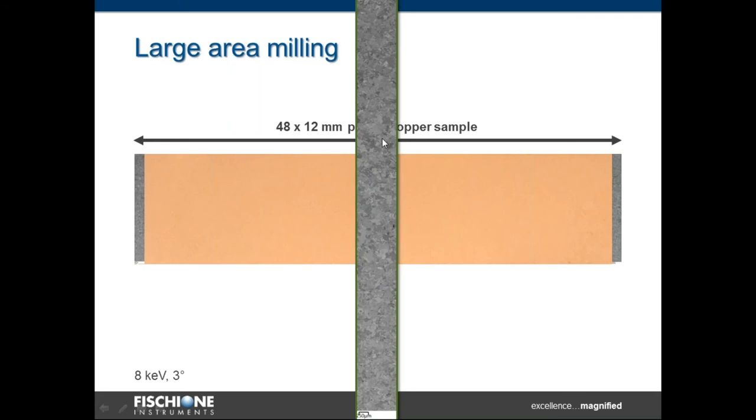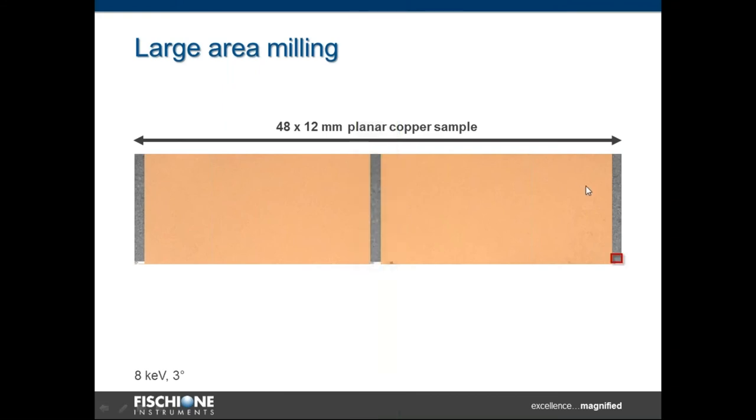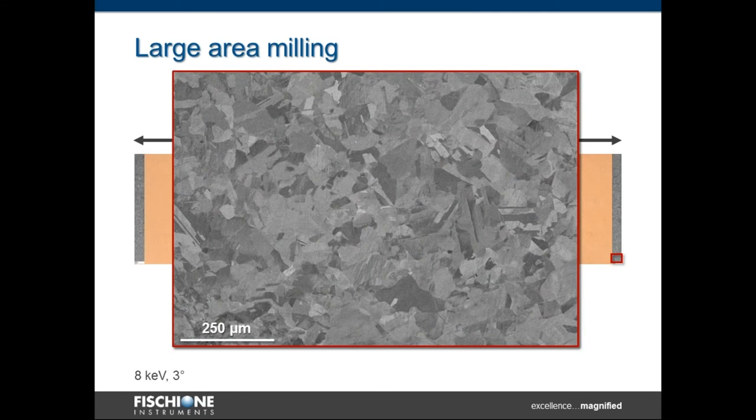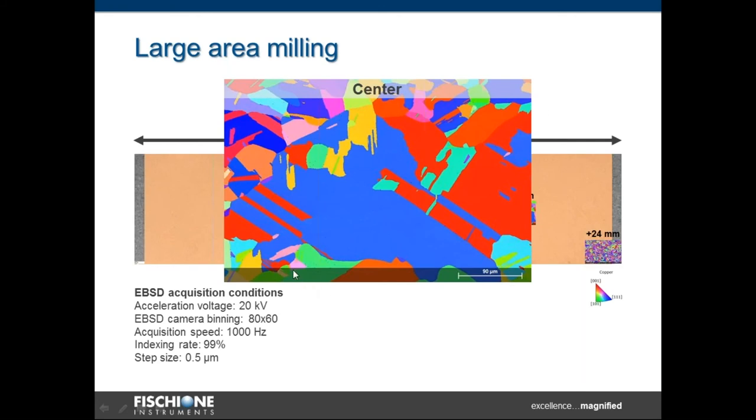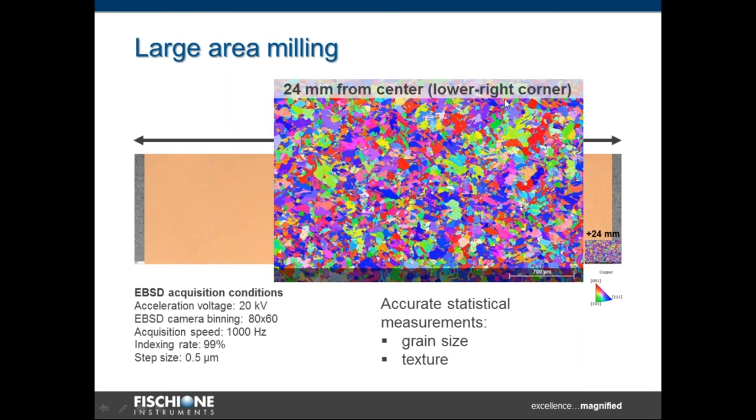We collected EBSD data to show you that the surface quality is very good. This map shows the center of the milling and another IPF map showing the right bottom corner, which is 24 millimeters from the center. As you can see, the EBSD data has the same quality for the center as for the periphery of the sample.